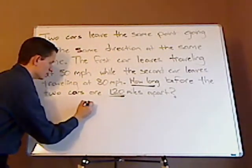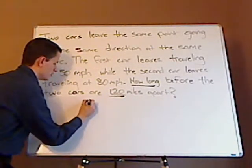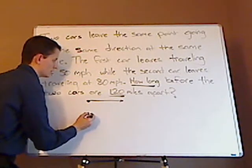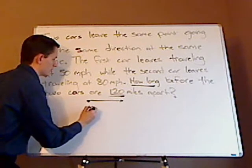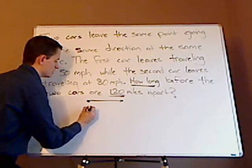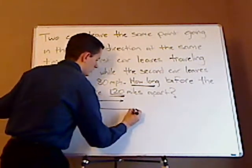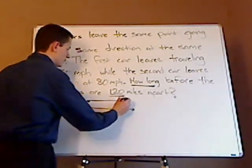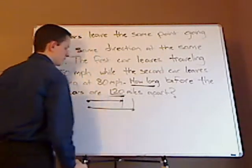So let me show that on the board what's going on. You have the first car going like this pretty slow and then you got the second car going faster. So you have this distance apart.